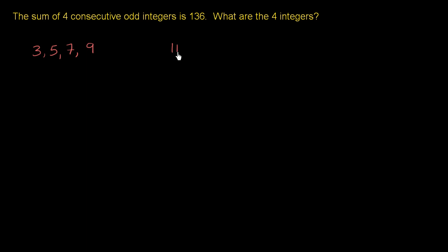Another example: we could start at 11, then the next odd integer is 13, the next one is 15, the next one is 17.